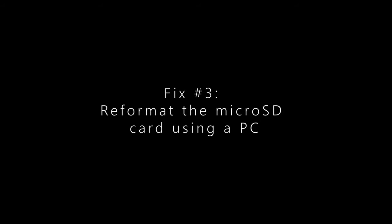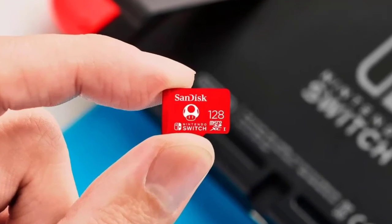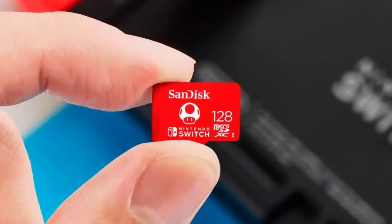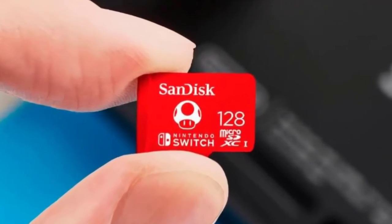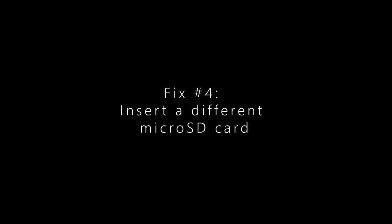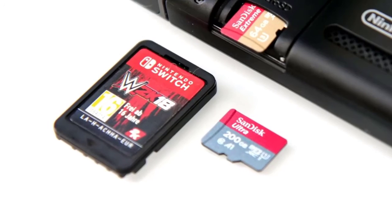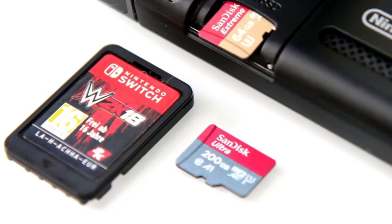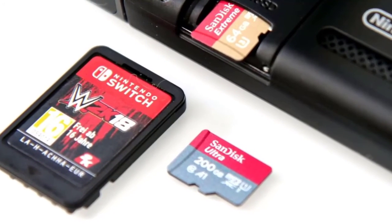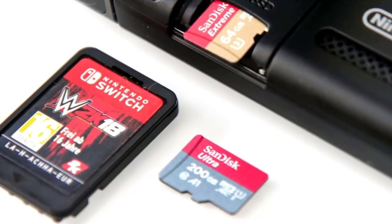If all the solutions provided have already been applied and the error code persists, try to reformat the microSD card on your PC to remove the problem. If reformatting does not help, replace the existing microSD card with a new one for your Nintendo Switch, especially if you have confirmed that the microSD card is also not recognized on other devices.